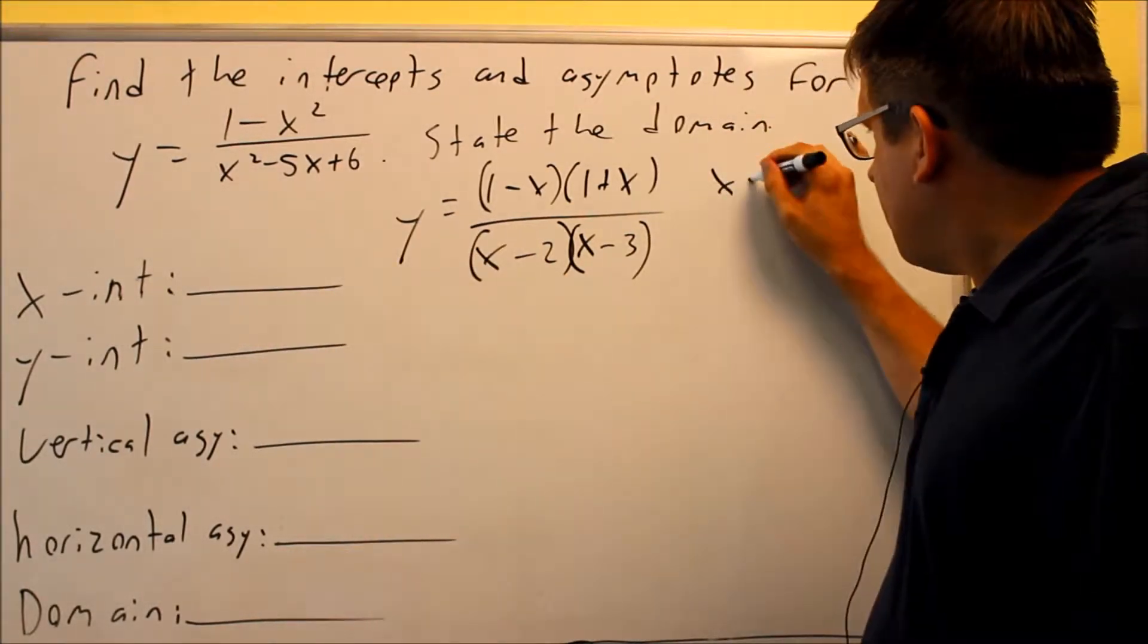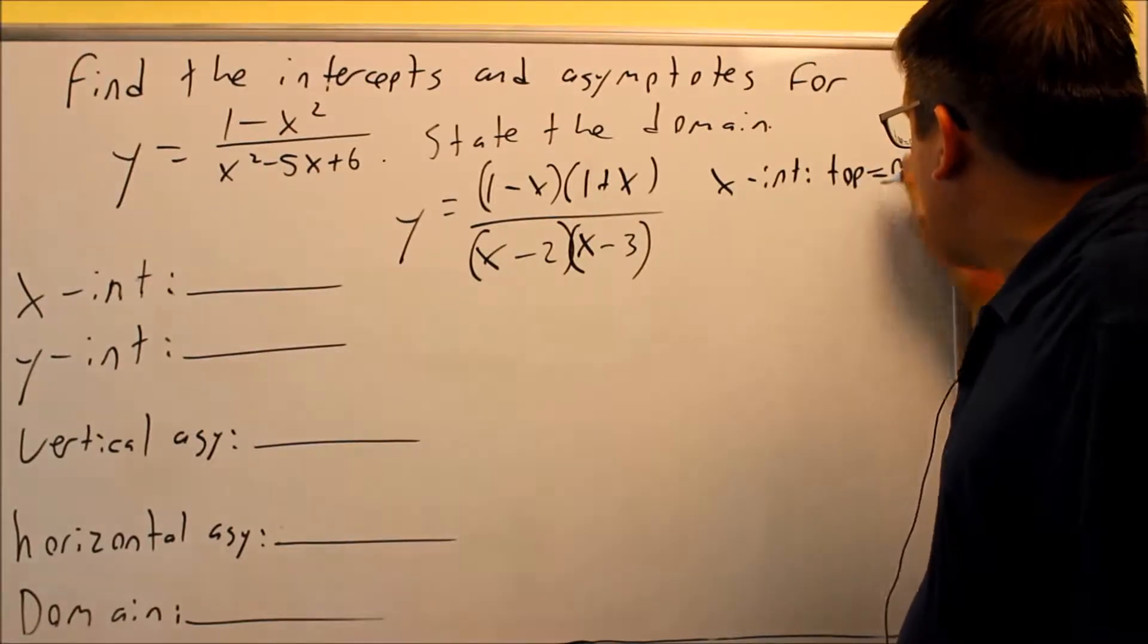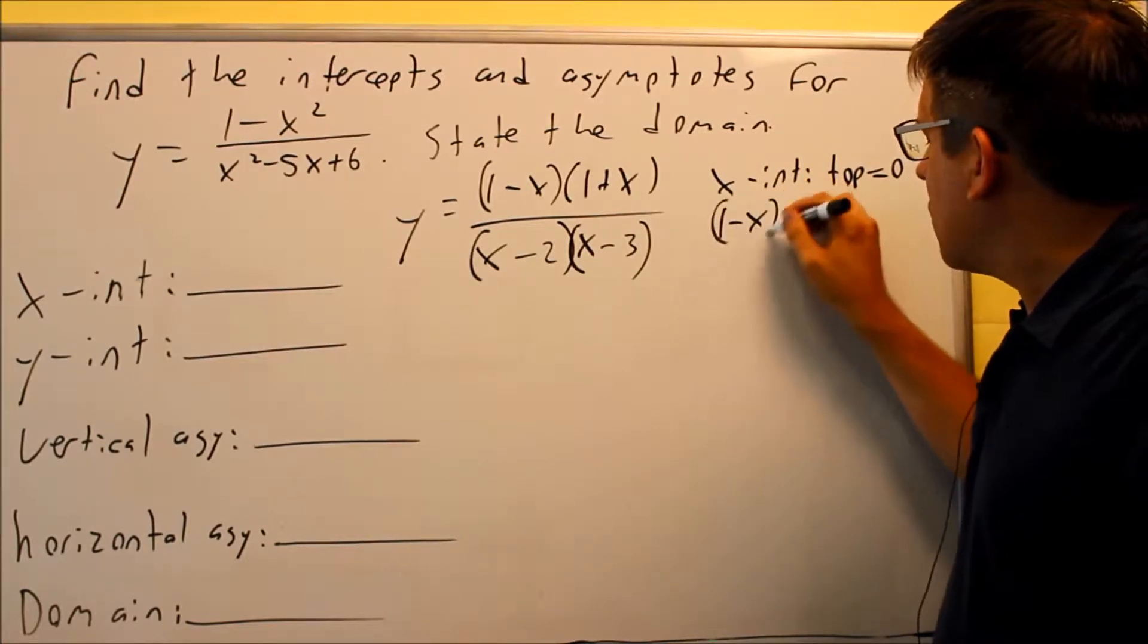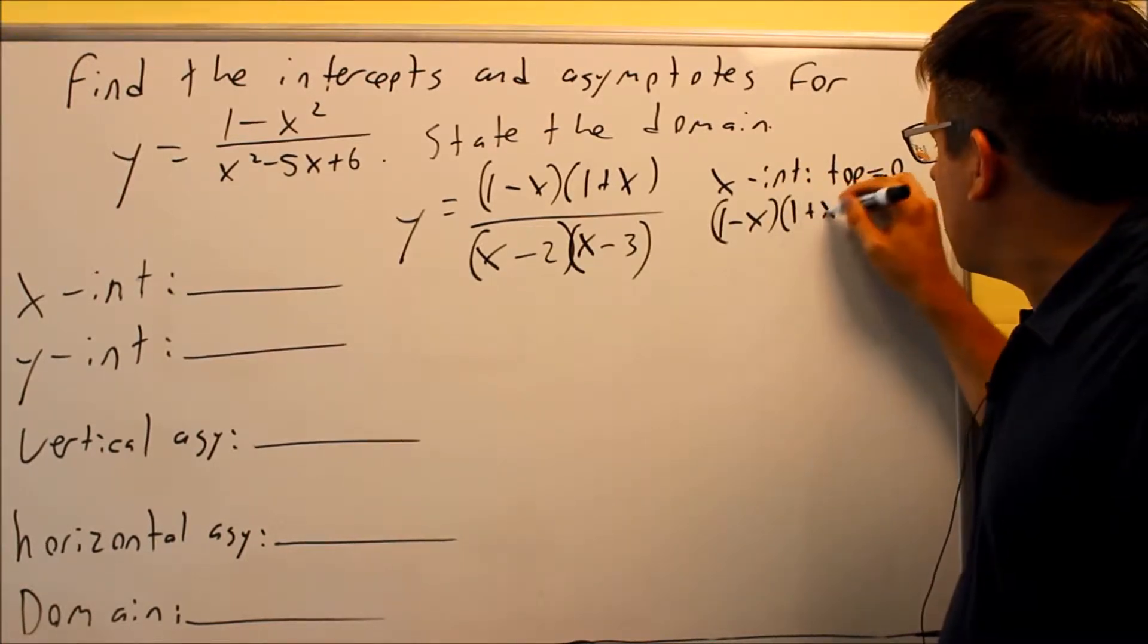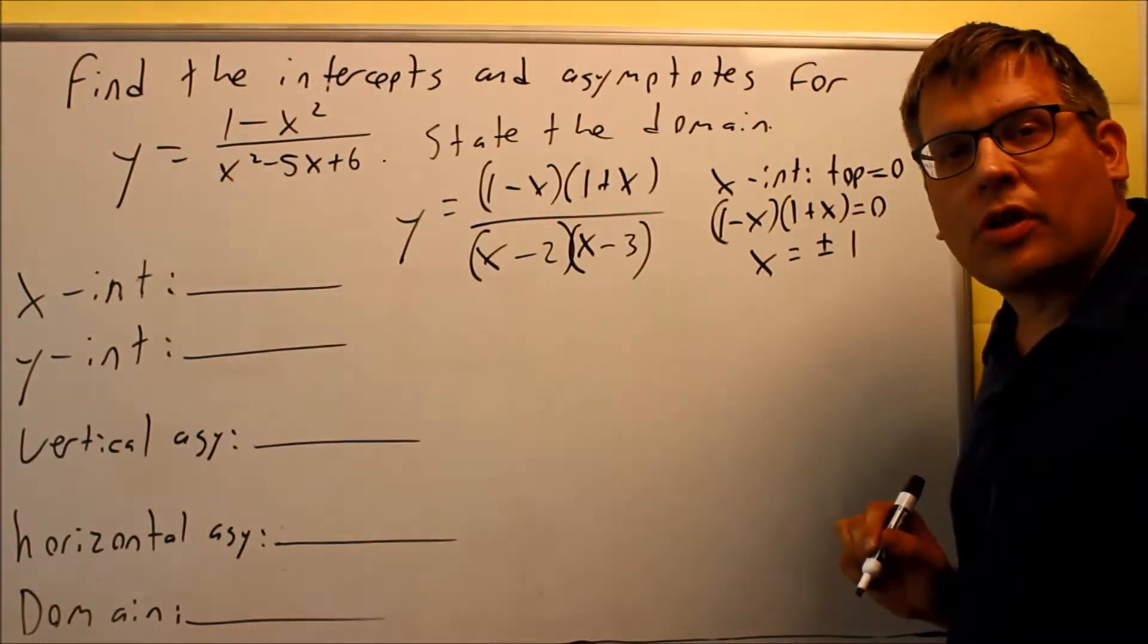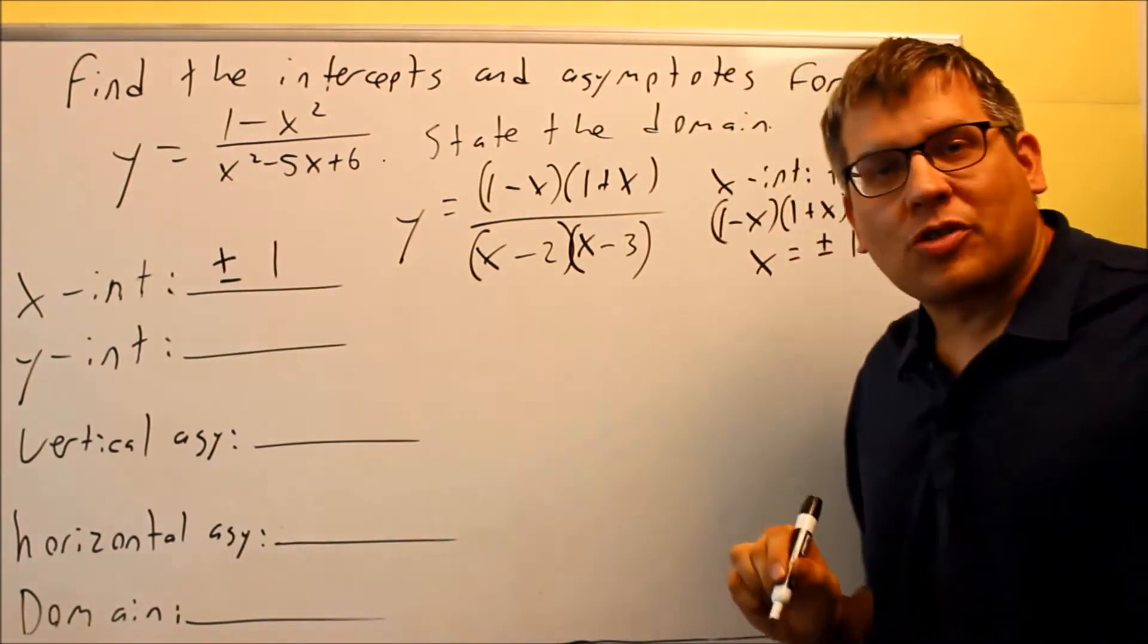So for x-intercept, what you're going to do is, again, you're going to set the top equal to 0. So we'll do the top equal to 0. You're going to do 1 minus x and 1 plus x. That's going to equal 0. And you're going to get that x is equal to plus or minus 1. So right here, we're going to put plus or minus 1.